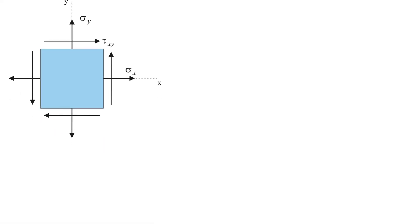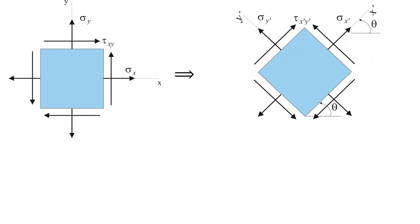As we have already seen, the state of plane stress at a point can be characterized by a combination of two normal stresses, sigma x and sigma y, and one shear stress, tau xy. If we rotate this plane stress element by an angle of theta, then it will be subjected to three new stress components: sigma x prime, sigma y prime, and tau x prime y prime. These three components are unique for each specific orientation theta, meaning that they will be different for each orientation of theta.